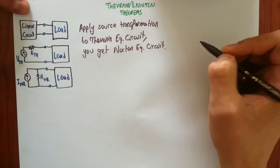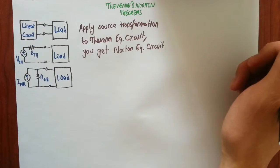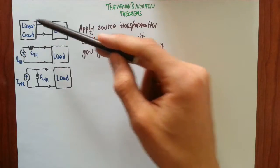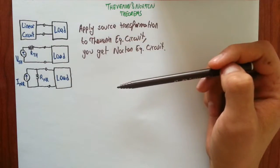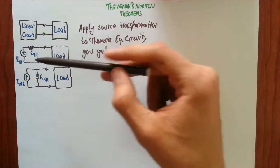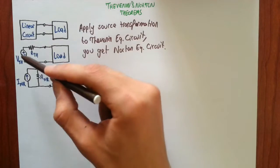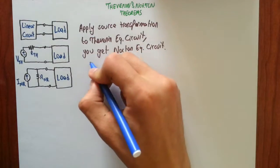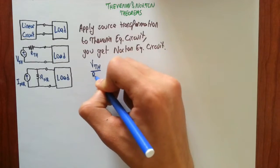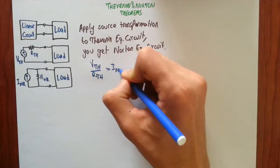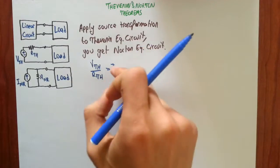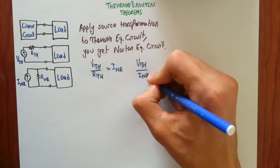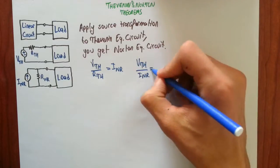That's a very handy statement, because it gives you another method to find the equivalent resistance between these two terminals. If you apply source transformation to the Thevenin equivalent circuit, remember we find current by dividing voltage by resistance. So if you divide V_Thevenin by R_Thevenin you get I_Norton. And if you interchange those two terms and divide V_Thevenin by I_Norton you get R_Thevenin.